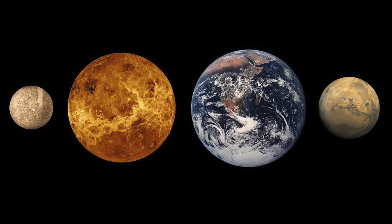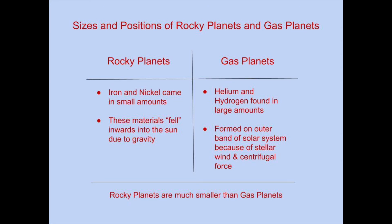Sizes and positions of rocky planets and gas planets. You may have noticed that rocky planets are much smaller than gas planets. The reason for this dates all the way back when the solar system was formed — elements like iron and nickel came in smaller amounts, and the rocky planets therefore became a lot smaller. Due to gravity, these heavy metals fell towards the sun, and this is also why the planets are found nearer to the sun. Lighter elements like helium and hydrogen were most abundant in the early solar system, and due to the effects of stellar wind and centrifugal force combined, these light gases formed on the outer band of the solar system.